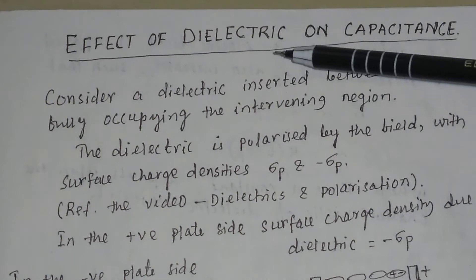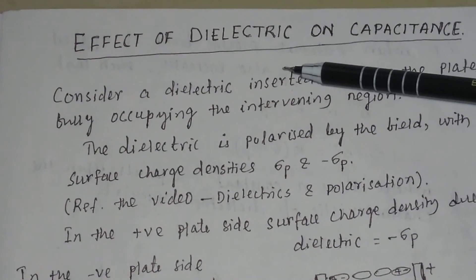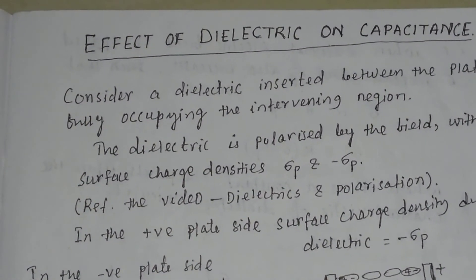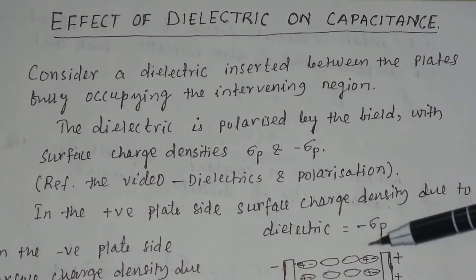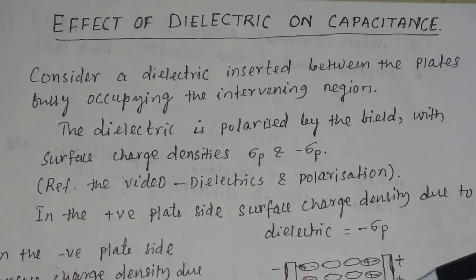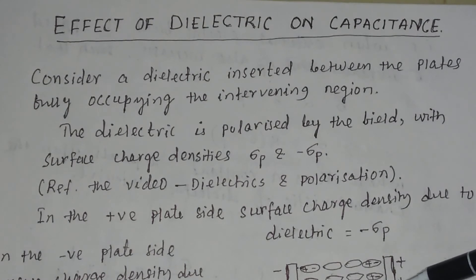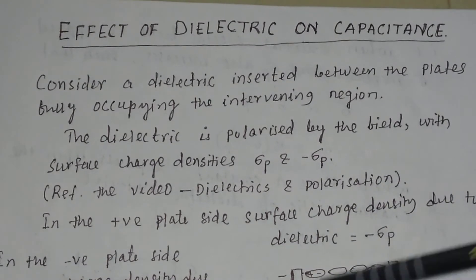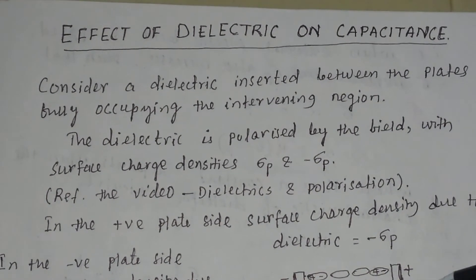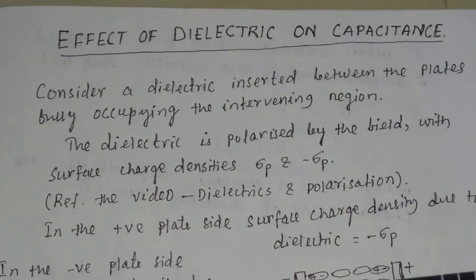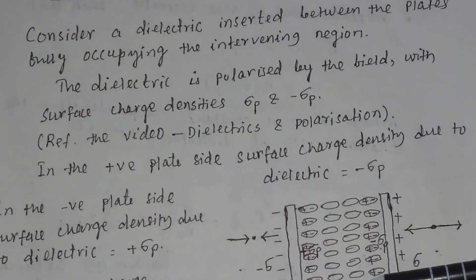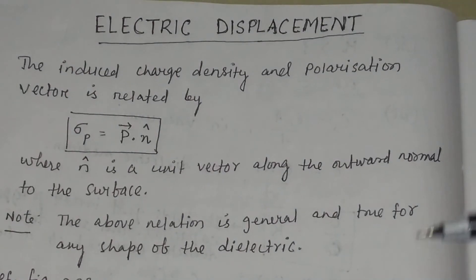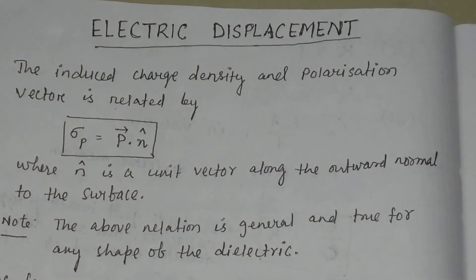In summary, when a dielectric is introduced between the parallel plates of a capacitor, the capacitance of the capacitor increases. The free charge on the two plates remains the same, but the effective charge sigma minus sigma p changes. The potential between the two plates also varies. In the next video, we will discuss electric displacement. Thank you.